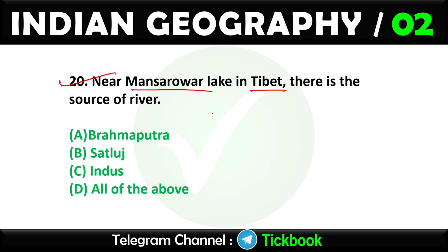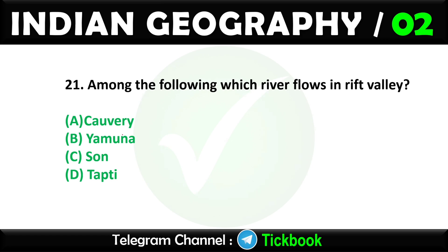Question twenty: Near Mansarovar Lake in Tibet, there is the source of which river? Option number D is the right answer: Brahmaputra, Satlej, and Indus river. Question twenty-one: Among the following, which river flows in a rift valley? Option number D is the right answer: Tapti.